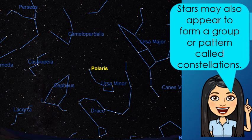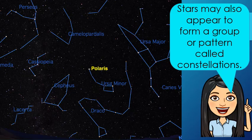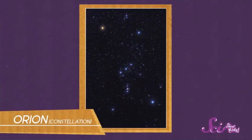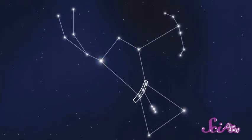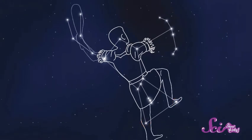Stars may also appear to form a group or pattern called constellations. Most constellations were named many years ago. People name stars after the shapes of animals or their gods. In ancient Greece, star-gazers thought that they looked like the belt of a great hunter. They thought the two bright stars above it would be where his shoulders were, and the two stars below it his legs. The more people looked, the more other things they saw.